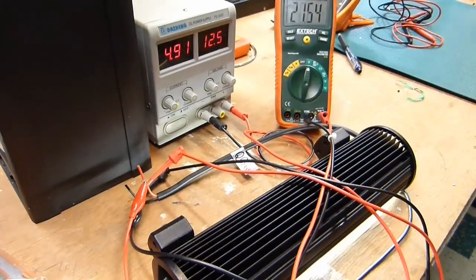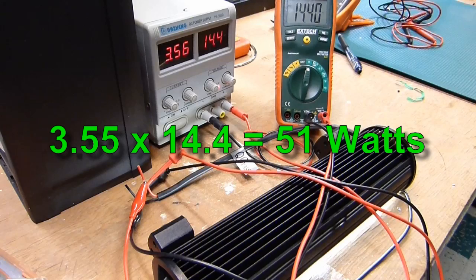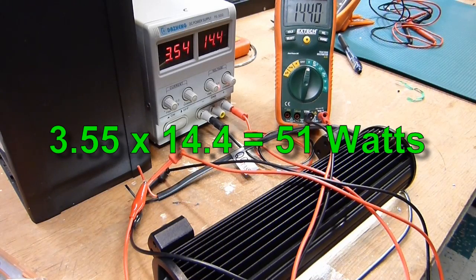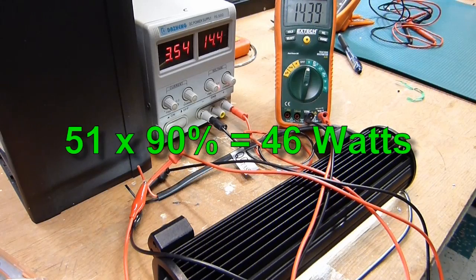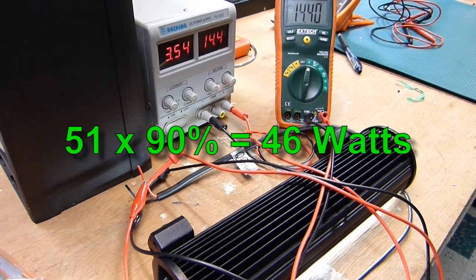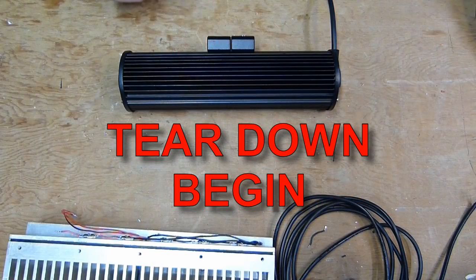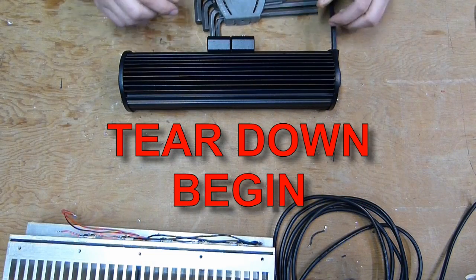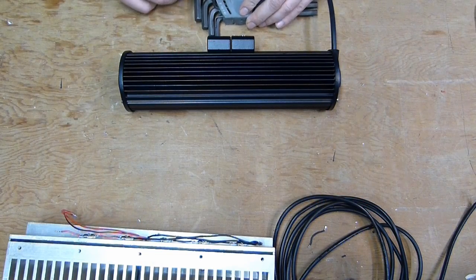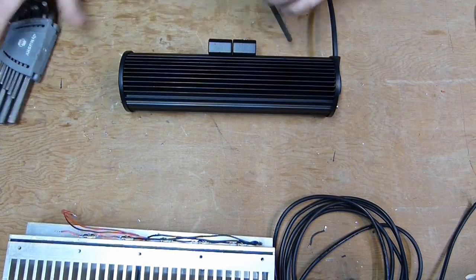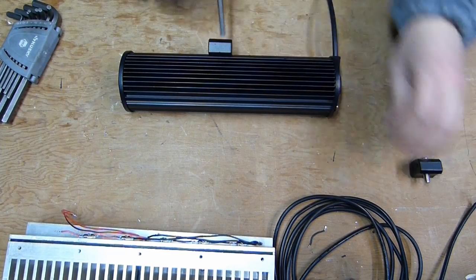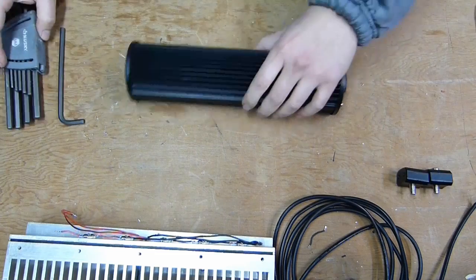So we'll go with 3.55 amps times 14.4 volts and that gives us 51 watts. And with some losses, the LEDs are probably getting about 46 watts of power. So they're quite a bit under-driven, which could be a good thing for longevity, bad thing for brightness or lumens.